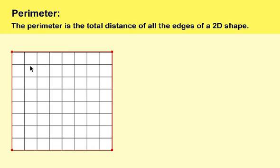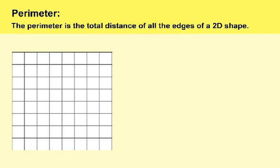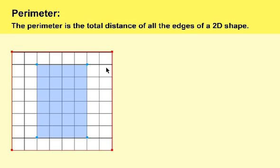One thing we have to notice is that each little square in the grid represents one unit. So let's keep that in mind — each square represents one unit and we're going to use this to find the perimeter of a shape. The first shape we have right here, let's say we have a rectangle, and we're going to use this grid to figure out the perimeter of this shape.